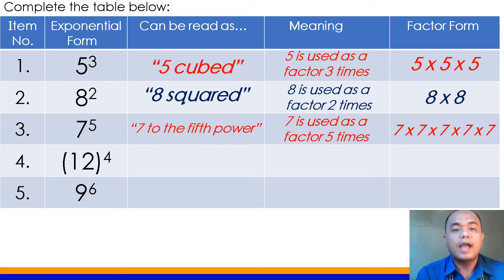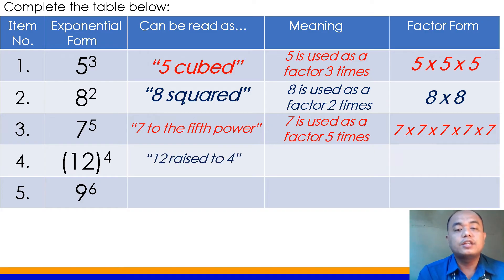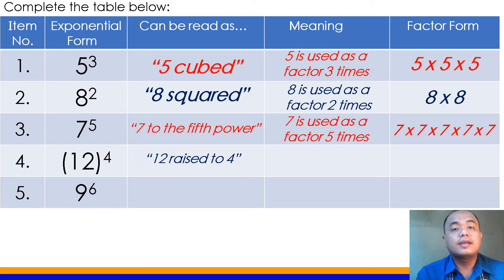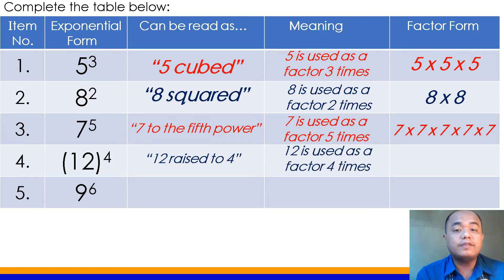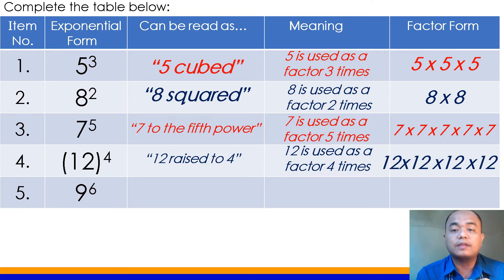Number 4: How do you read that? That is read as 12 raised to 4, or 12 raised to the 4th power, or 12 to the exponent 4. And it means 12 is used as factor 4 times, or 12 is being multiplied 4 times. The factor form is 12 times 12 times 12 times 12.